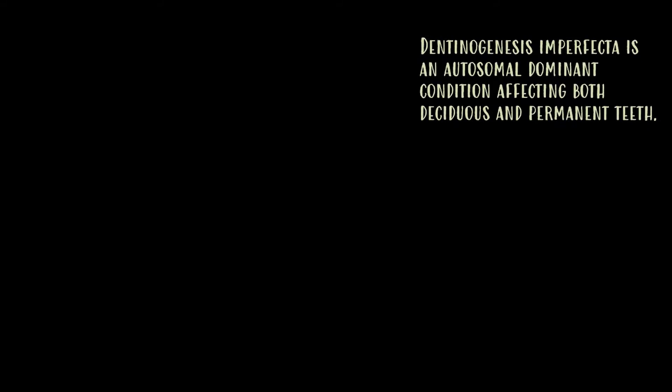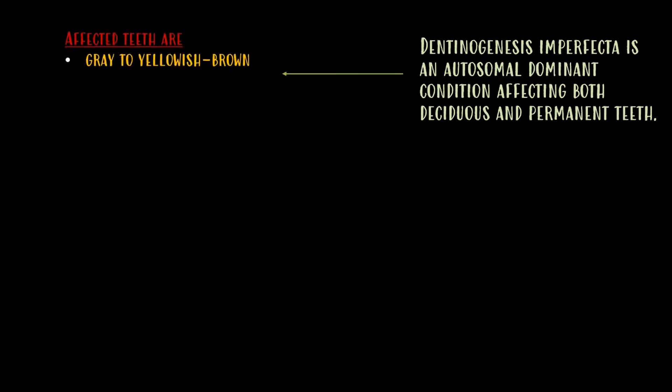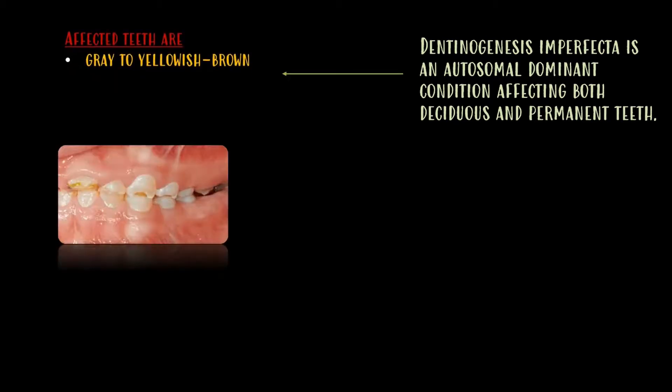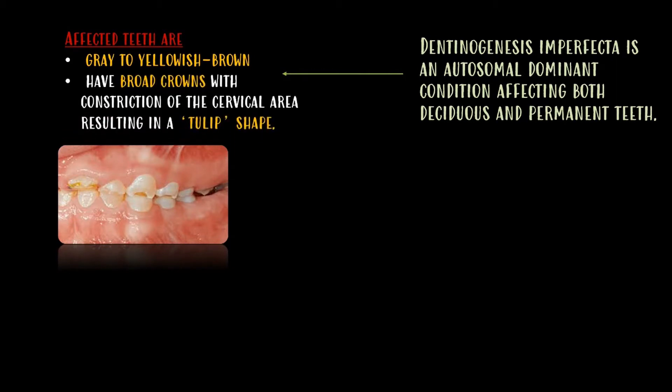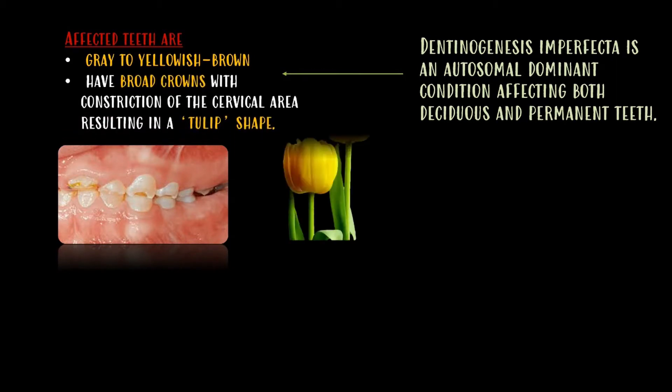Dentinogenesis imperfecta is an autosomal dominant condition affecting both deciduous and permanent teeth. The affected teeth are grey to yellowish-brown in colour and they have broad crowns with constriction of the cervical area, resulting in a tulip flower shape.